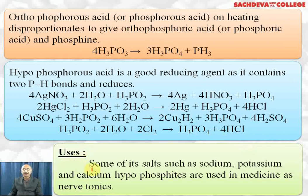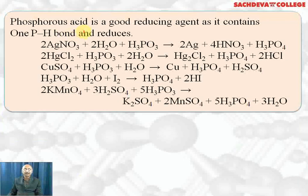Uses: some salts such as sodium, potassium, and calcium hypophosphites are used in medicine as a nerve tonic. Phosphorous acid, H₃PO₃, is also a good reducing agent as it contains one P-H bond, and it reduces substances like silver nitrate,